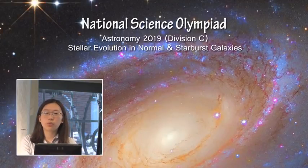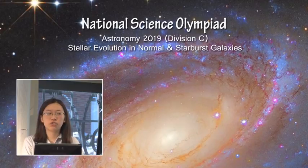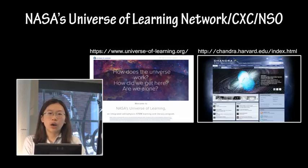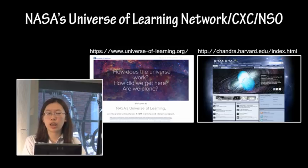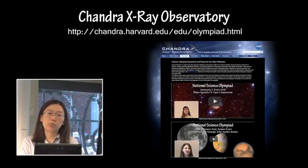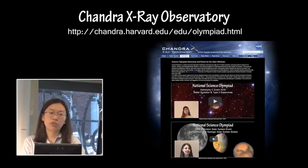Welcome to the 2019 webinar for National Science Olympiad Astronomy Division C. This year the topic is Stellar Evolution in Normal and Starburst Galaxies. We are supported by NASA's Universe of Learning in a partnership with the Chandra X-ray Observatory and National Science Olympiad. Their websites are accessible here, and this webinar will be posted on the Chandra website. Webinars from past years are also posted if you wish to see them.